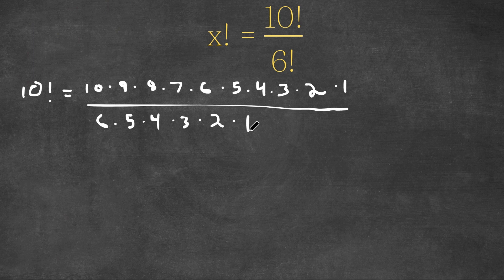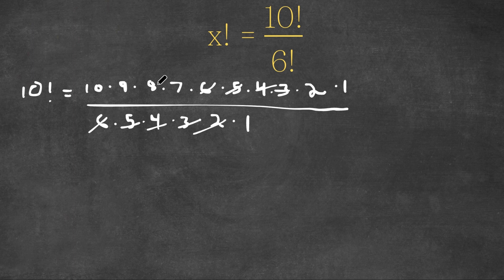If you notice, we have 6 on our numerator as well as 6 on our denominator. So these two can cancel out. Same thing with 5, same thing with 4, and same thing with all the terms below 6.